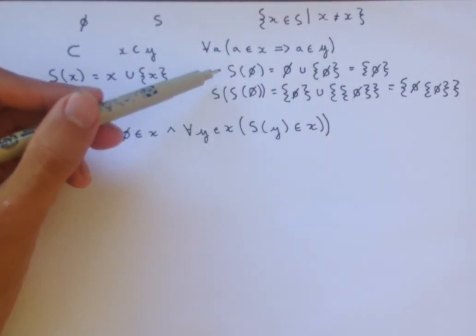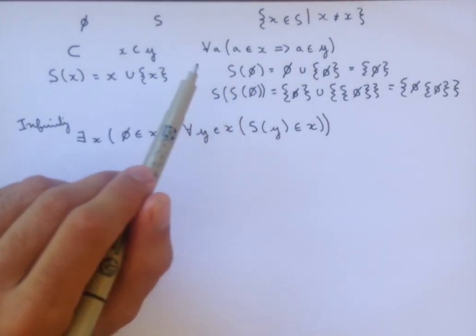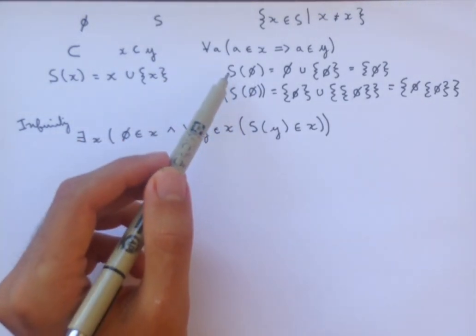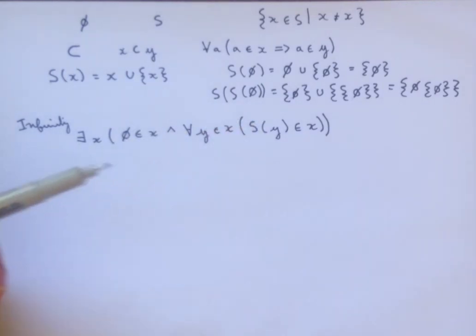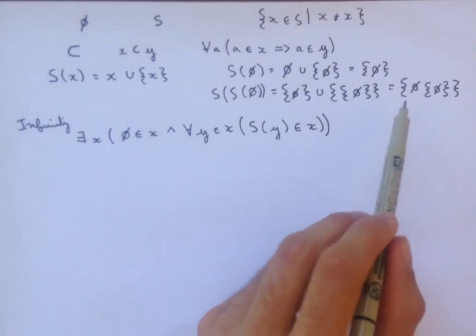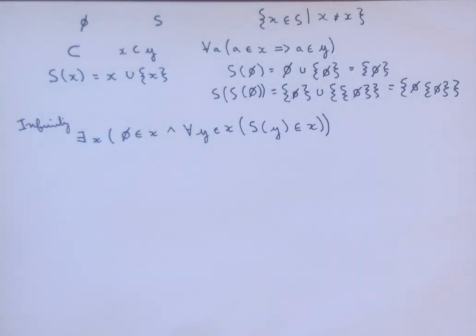then it has the S of the empty set, or the ordinal successor is what we call this function. And then it has the ordinal successor of that element, and it just keeps on going. We never hit the same element again, we don't fall into a loop. We just get these bigger and bigger, more complicated sets. And so, this is the infinite set that we're guaranteed by the axioms.